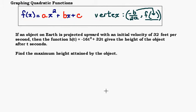Our problem says: if an object on Earth is projected upward with initial velocity of 32 feet per second, then the function h(t) = -16t² + 32t gives the height of the object after t seconds. Find the maximum height attained by the object.